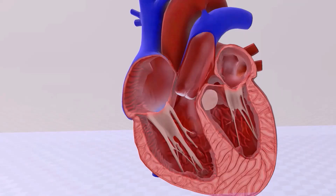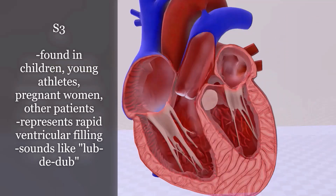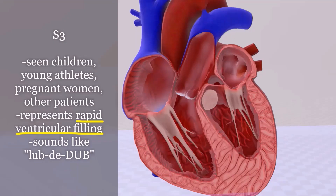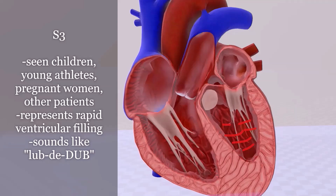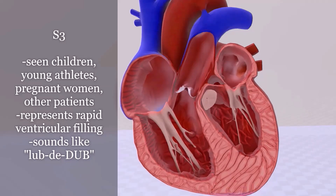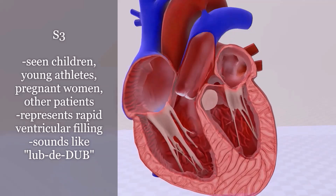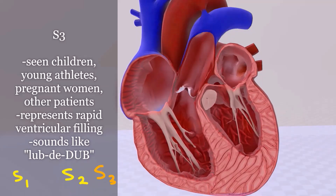Before talking about stenosis and regurgitation, let's cover S3 and S4. S3 is not always found — it's sometimes heard in children, young athletes, pregnant women, or patients with certain conditions. It represents rapid ventricular filling from the left atrium to the left ventricle, and it occurs about 0.1 seconds after S2.